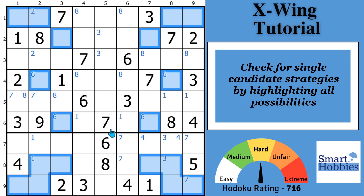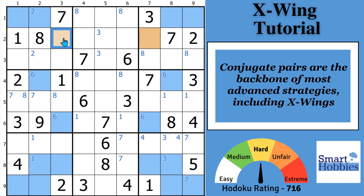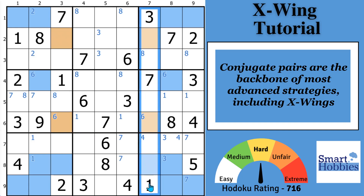Now what you might see is that in row two, the sixes are only possible in two spots. They form what's called a conjugate pair — either a six is going to be here or there; they rely on each other. If you look down in row six, you'll also notice that the sixes are restricted to two spots in the same two columns: column three and column seven. So six has got to be there or there, and this is the formation of our Sudoku X-Wing.